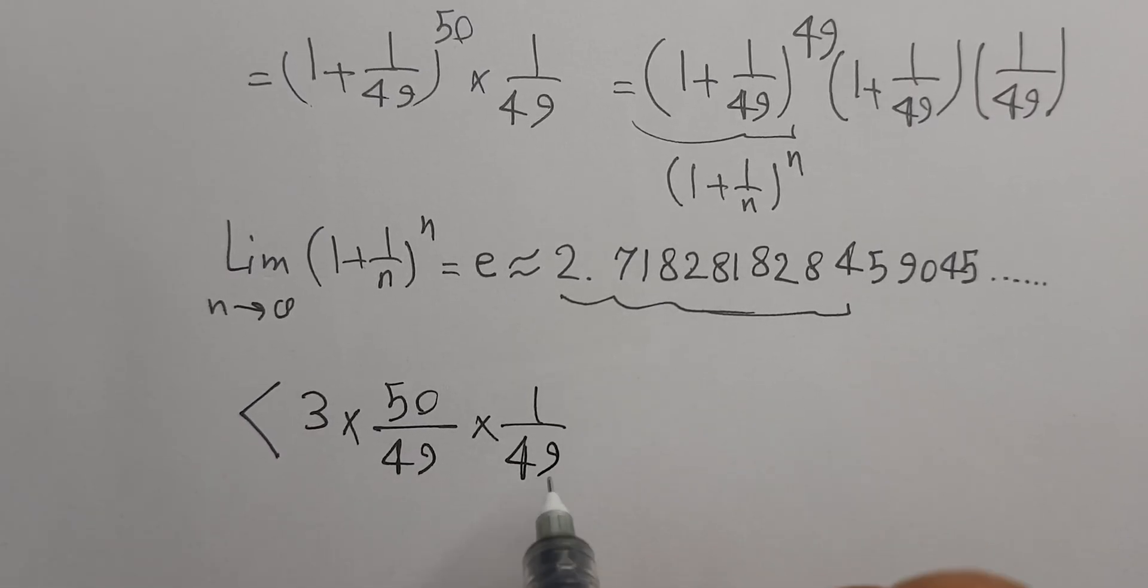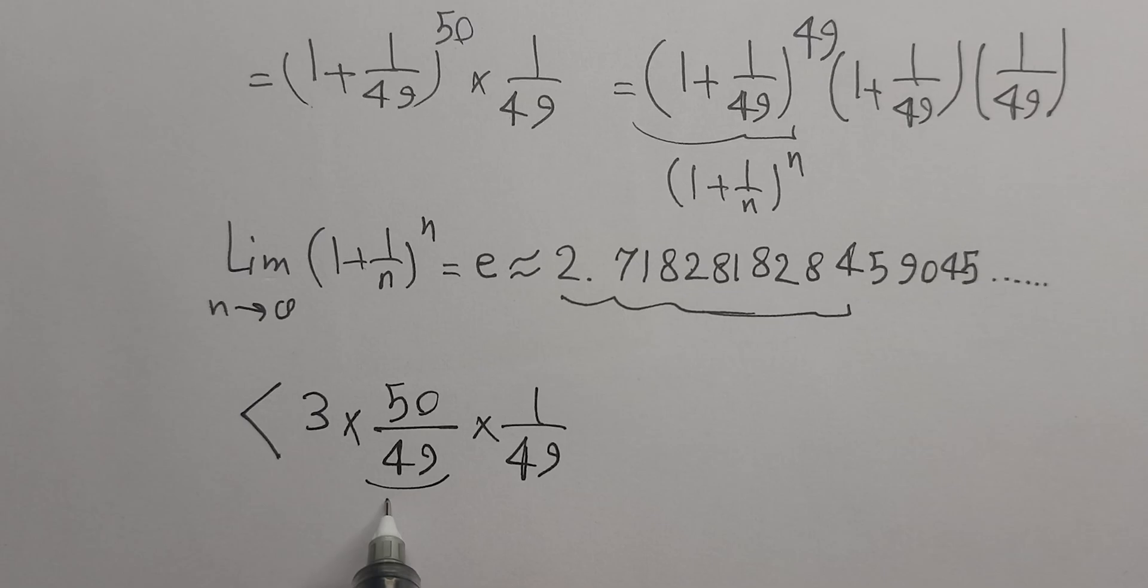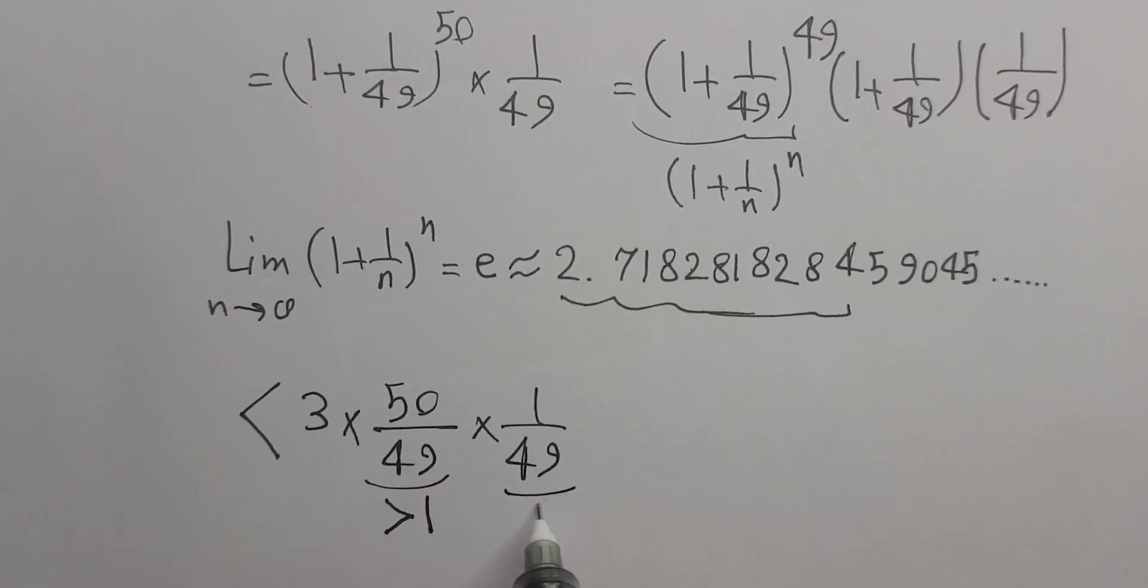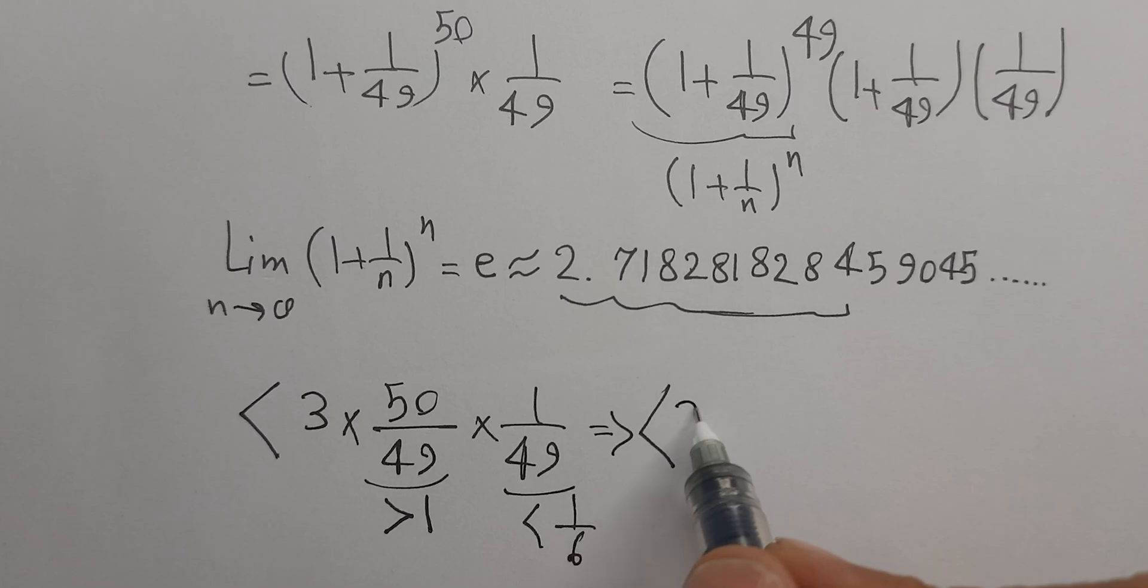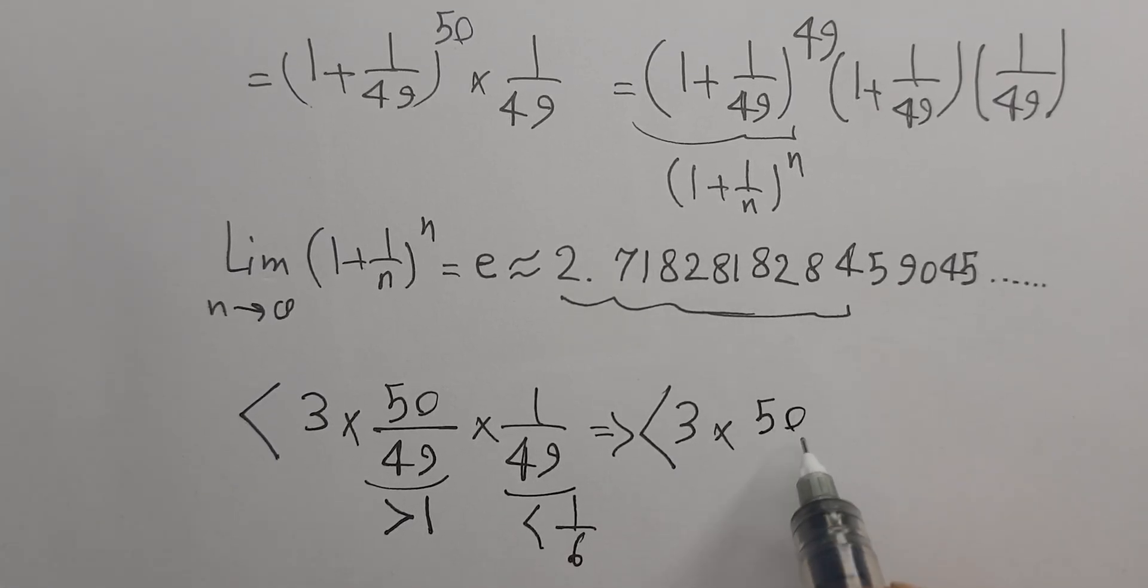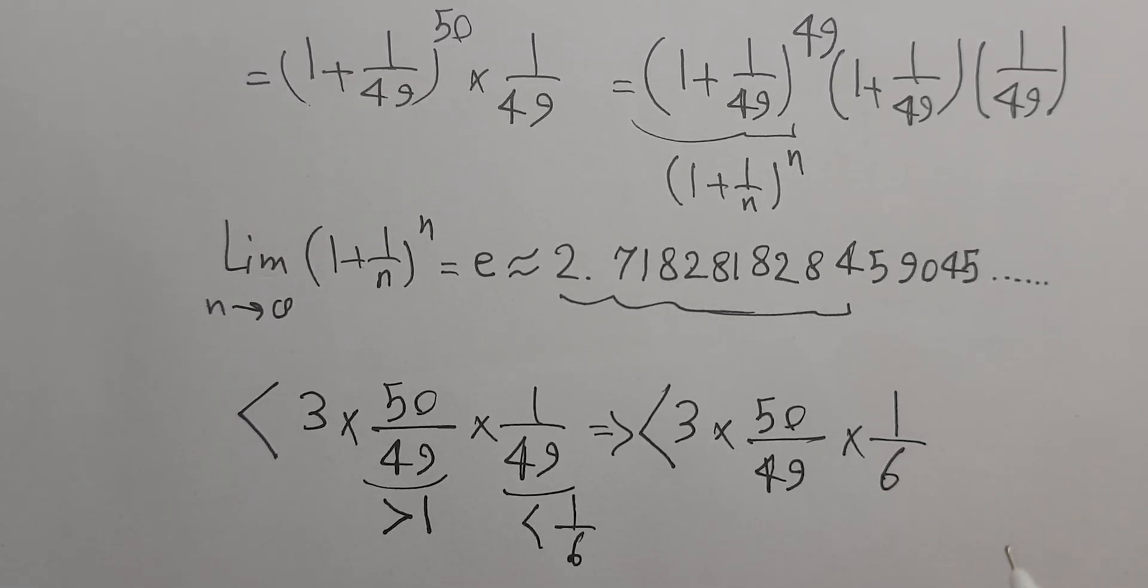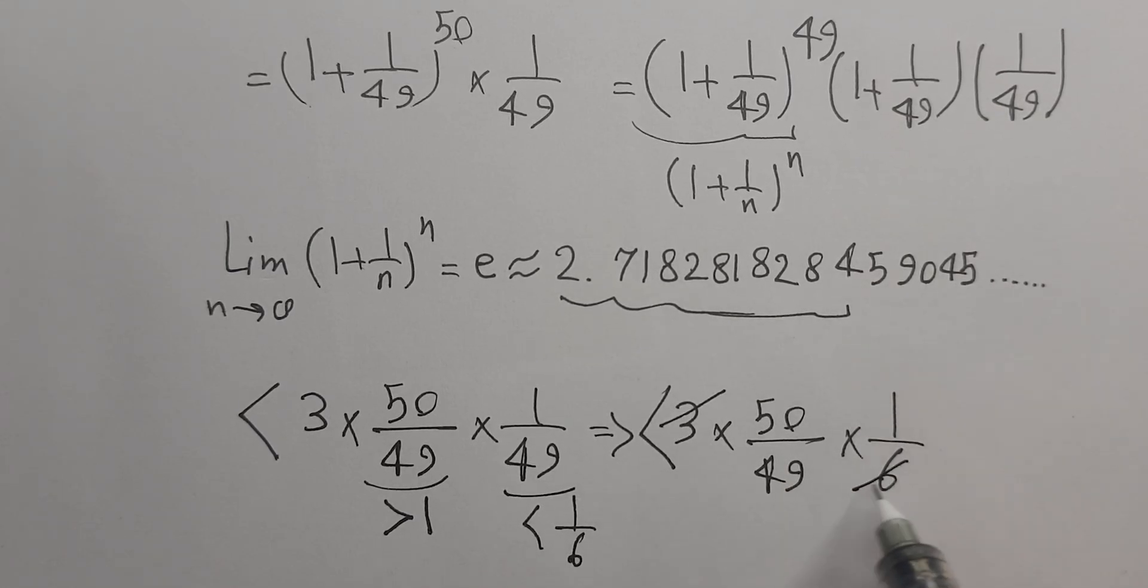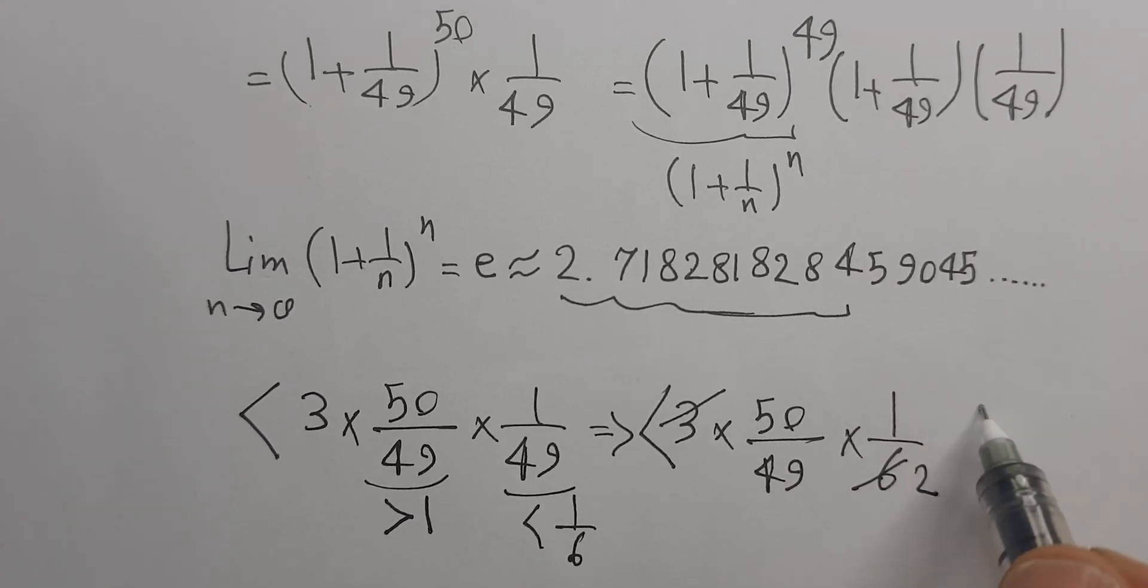1 over 49, this is larger than 1, and this is smaller than 1 over 6. So we have 3 times 50 over 49 times 1 over 6. So we can cancel 3 and 6, we have 2 here. So 50 over 98.